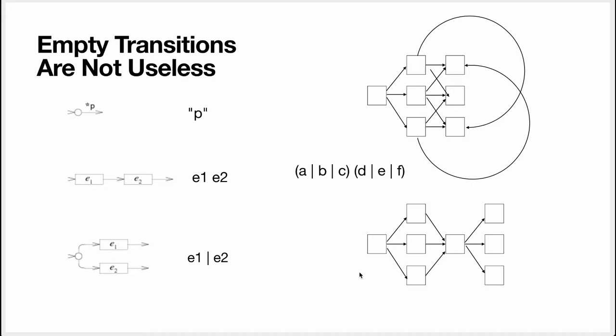You might think, yeah, but I could just remove them and just add the next transition, you know, the next character transition immediately. And so to illustrate that they're not useless, let me give you an example. So this is a sequence between two choices, and each choice has three characters.